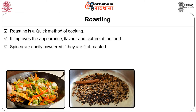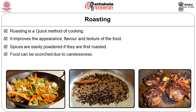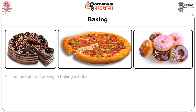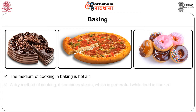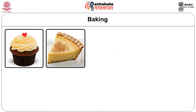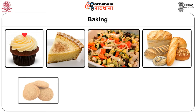Food can be scorched due to carelessness, and roasting denatures proteins, reducing their availability. The next method of preparation is baking. The medium of cooking in baking is hot air. A dry method of cooking, it combines steam which is generated while the food is cooked. A characteristic feature of baked foods is a brown and crisp exterior and a soft and porous interior. Cakes, custards, baked vegetables, breads, biscuits, pizzas and gratin are all baked foods.